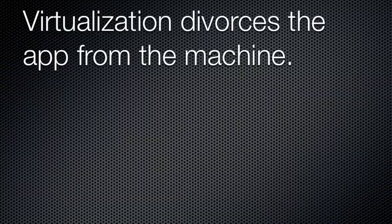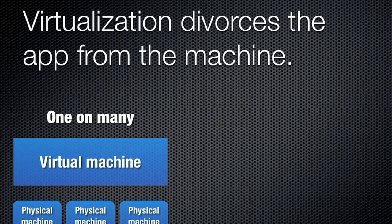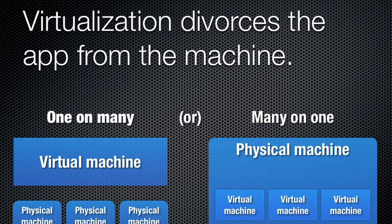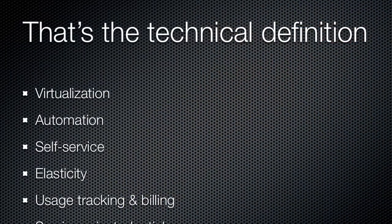That virtualization has divorced this application from the machine. So in this case, I've got a virtual machine that may be running on many physical machines, or I have a physical machine that could be running many virtual machines in it. But there's no longer a relationship between the hardware and the logical workload that I'm doing. So that's the technical definition of cloud computing. I said there are two. That's the first one. And this is the definition that anybody who's selling hardware, or anybody who wants to go and sell something to an existing IT person is going to tell you exists. If I want to sell you cloud computing, this is what's called a private cloud.